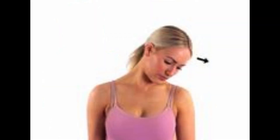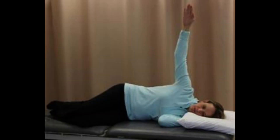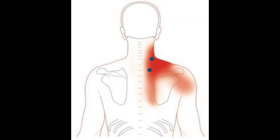Limited range of motion: trigger points can lead to a reduced range of motion in the neck and shoulders. Turning the head or lifting the arm may be uncomfortable or restricted. Referred pain: trigger points in the levator scapulae muscle can refer pain to other areas, such as the back of the head, medial border of the scapula, and upper back.